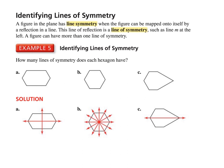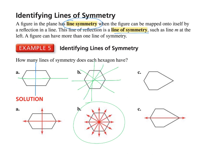Next concept: a figure in the plane has line symmetry when the figure can be mapped onto itself by reflection in a line. This line of reflection is called a line of symmetry. For example five, if I draw a vertical line through a figure, it's the same on both sides — that's a line of symmetry. Here's another one: same on top as on the bottom. For part B, you could draw lines from point to point. For the next shape, the only line of symmetry is a horizontal line where the top is the same as the bottom.